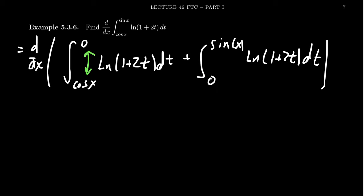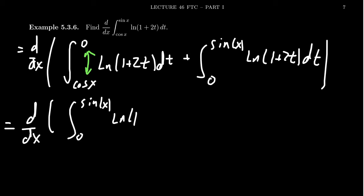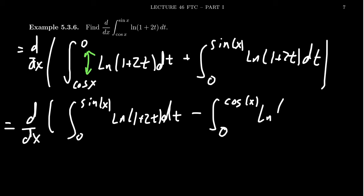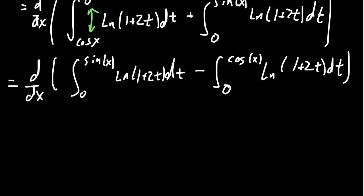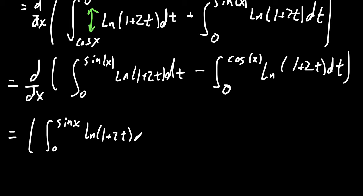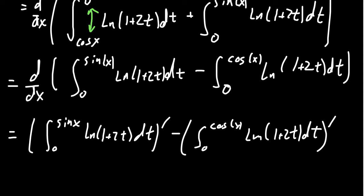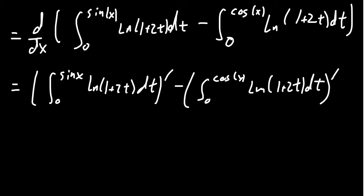The first integral has zero in the wrong spot, so we flip it. Using properties of integrals, we get d/dx of the integral from 0 to sine(x) of ln(1 + 2t) dt, minus the integral from 0 to cosine(x) of ln(1 + 2t) dt. This turns the problem into something similar to the previous example, and we can take the two derivatives separately.